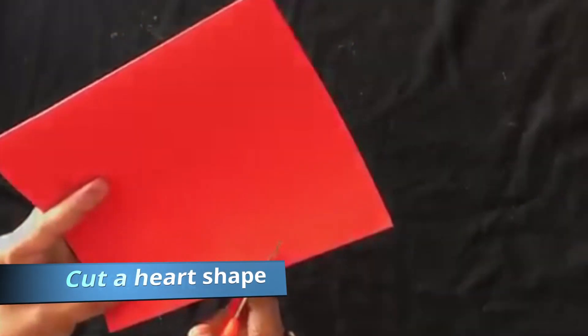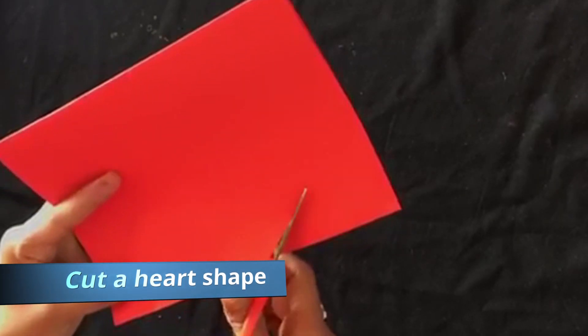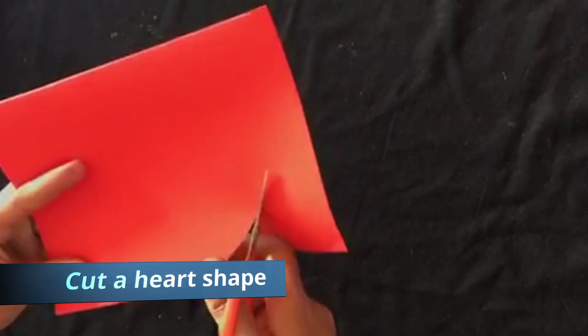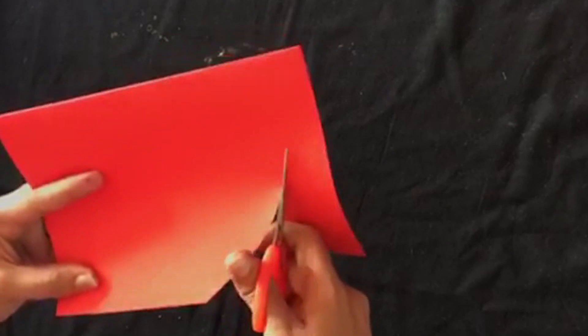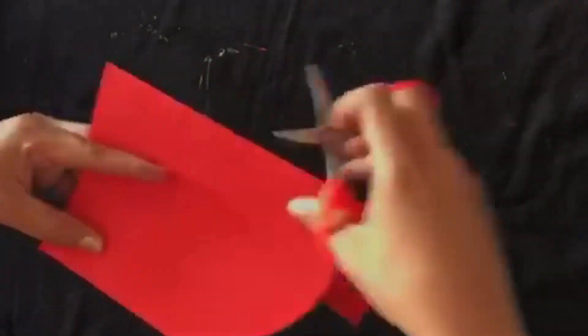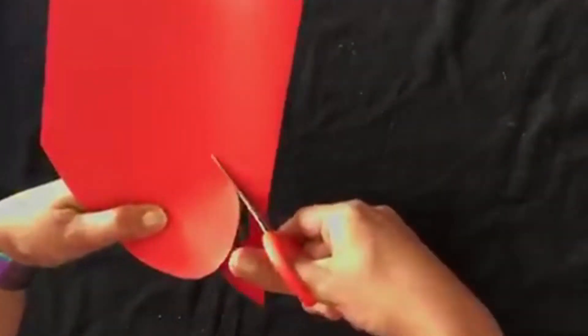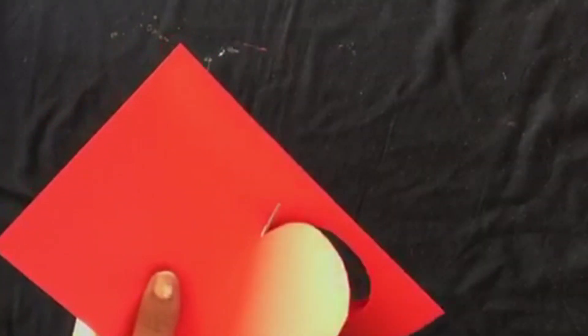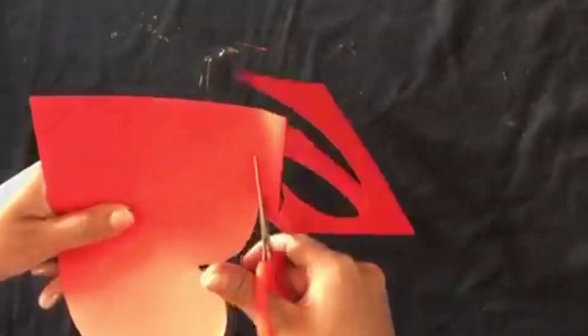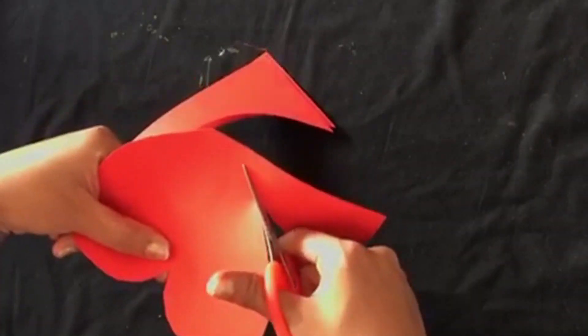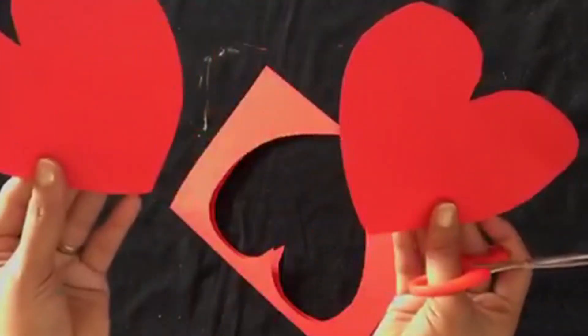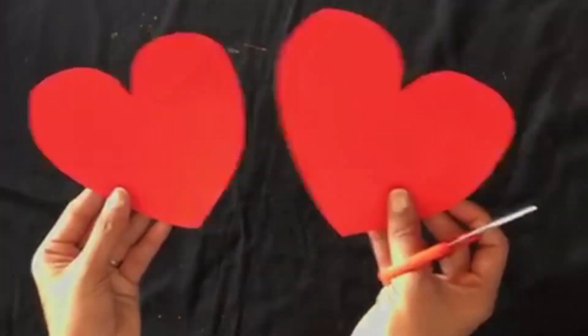Use coloured sheets to get 10 hearts, but you can simply use one colour. Cut out 10 hearts and be ready for the activity.